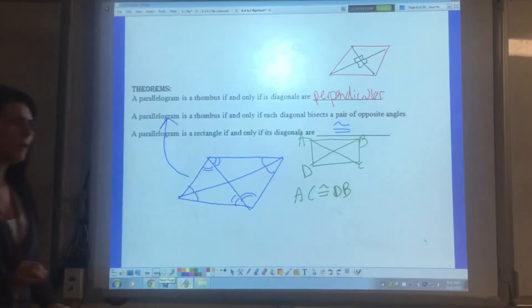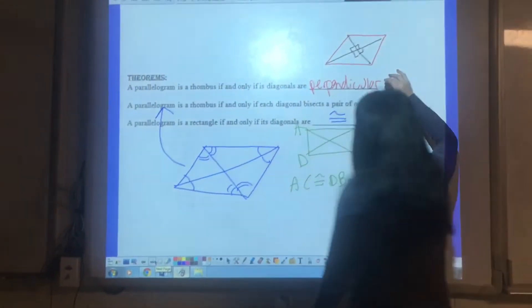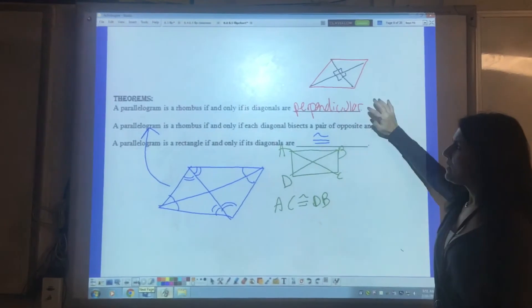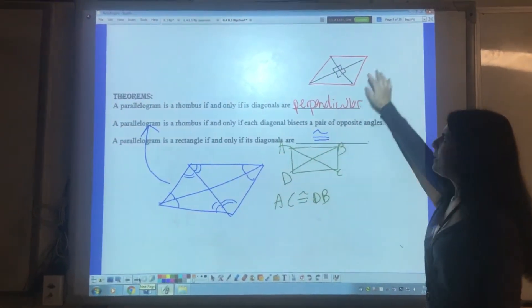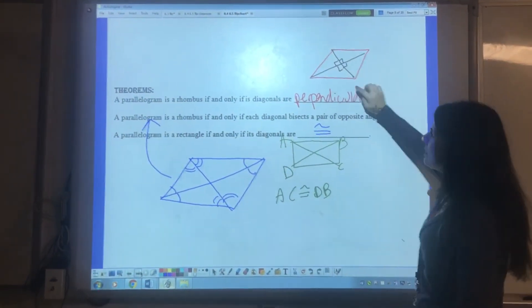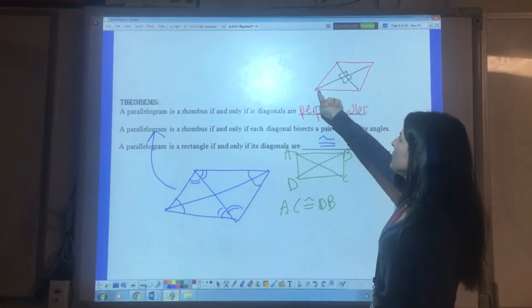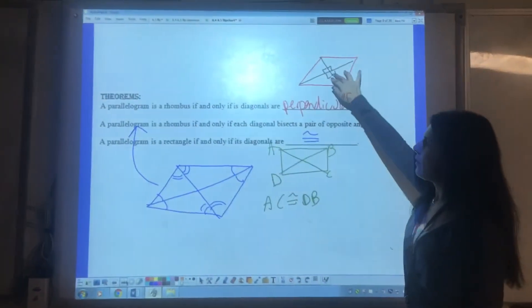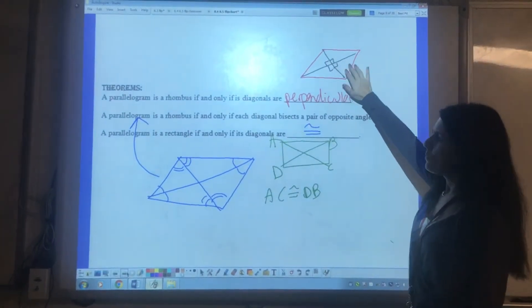These are new theorems. These are the ones that are a little bit confusing. This first one is where you guys were having trouble with your robot project. It's a rhombus if and only if the diagonals are perpendicular. What that means is this is a rhombus. These black lines are the diagonals and this theorem tells us that those diagonals meet at a 90 degree angle. That's what perpendicular means.